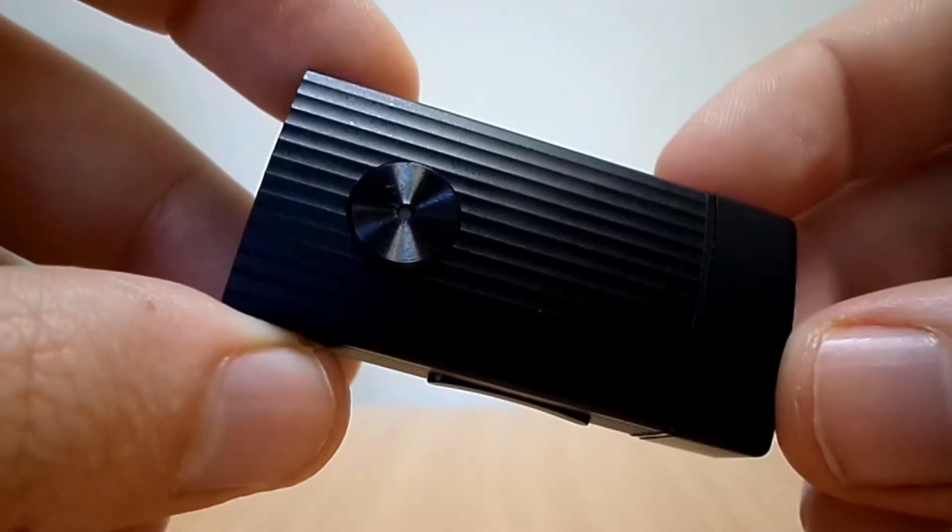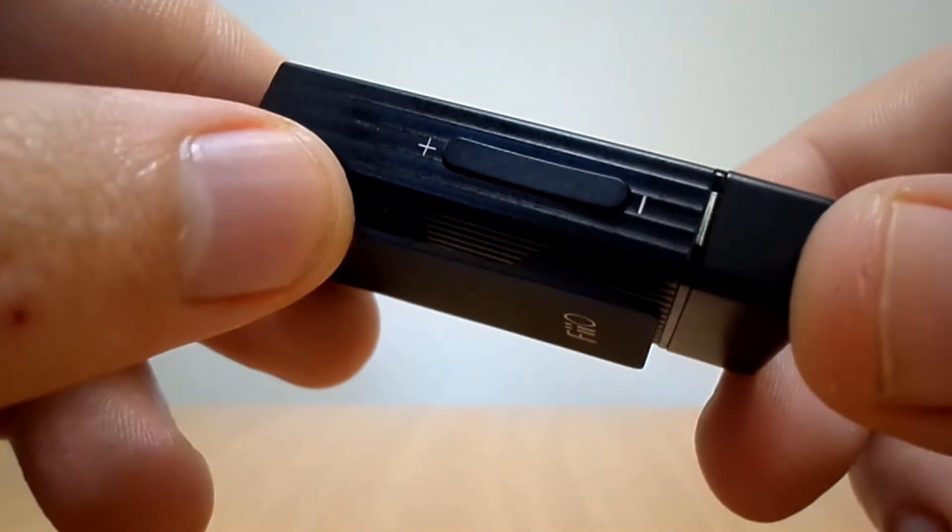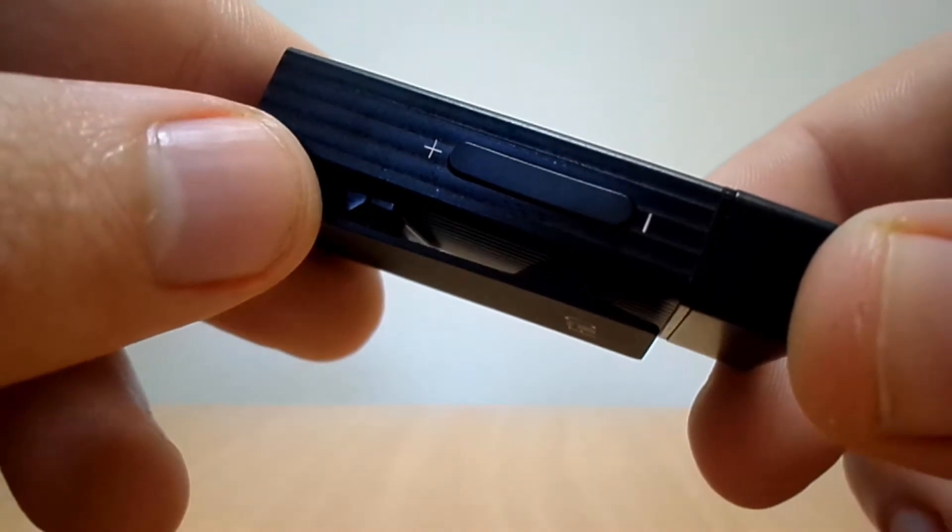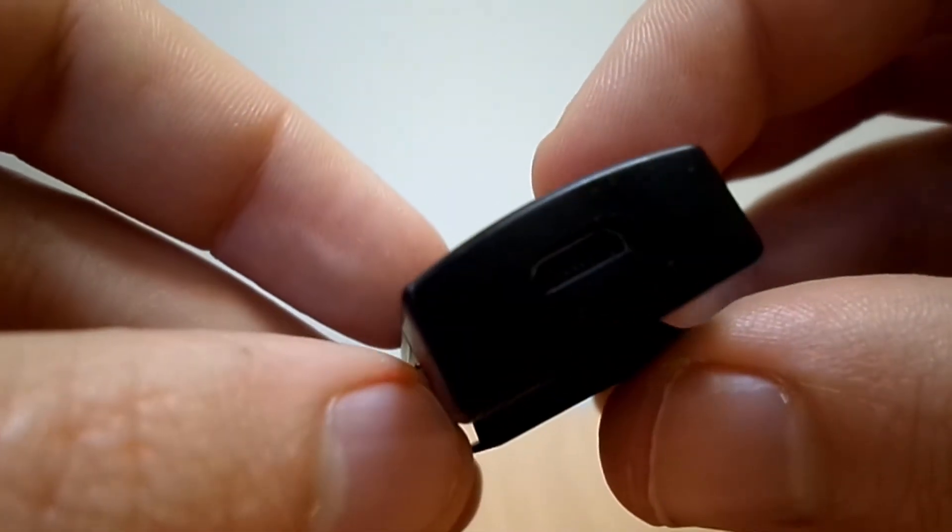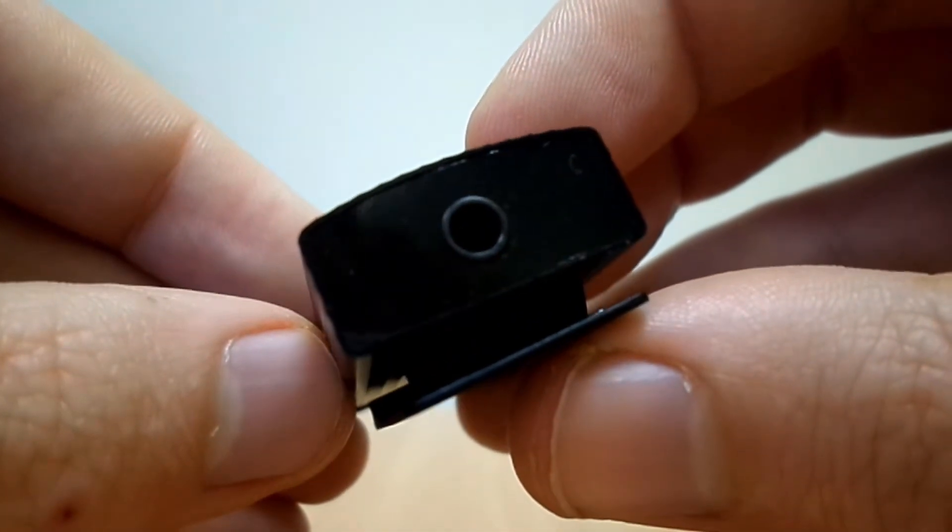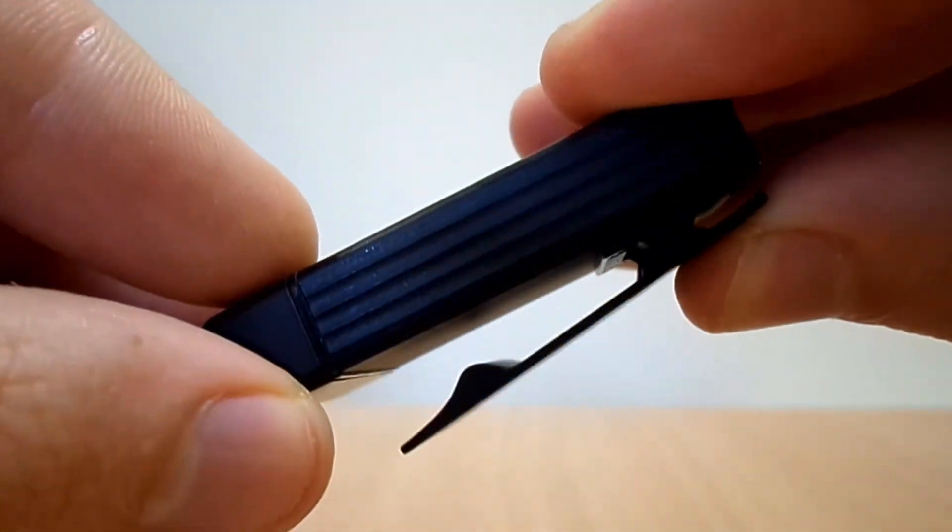The BTR1 features a large multifunction button on the front and two more multifunction buttons on the left hand side. On the bottom is a USB port, on the top a 3.5mm output. There is also a fastening clip on the back.